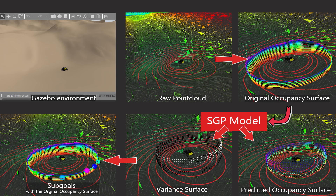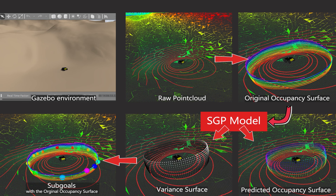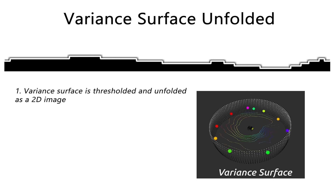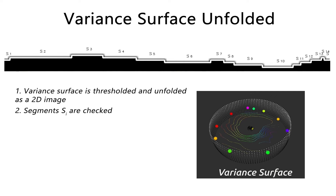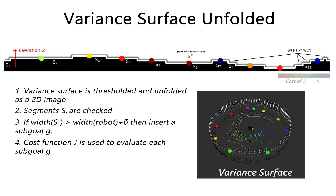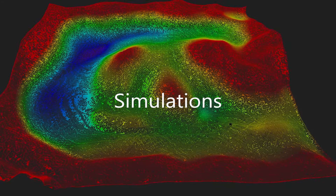The output from the SGP comprises a predicted occupancy surface and a variance surface. The variance surface is analyzed to derive local navigation goals. Upon unfolding the variance surface and thresholding it, segments are examined. If the width of a segment exceeds the sum of the robot's width and a predetermined threshold delta, a sub-goal is inserted at the segment's midpoint. A cost function J is employed to evaluate each sub-goal, with the goal G* having the lowest cost being forwarded to the controller.